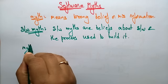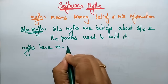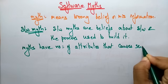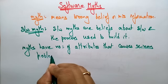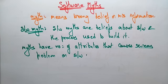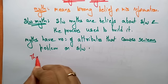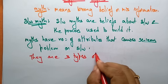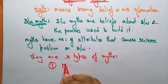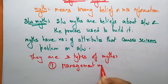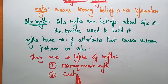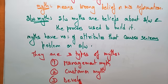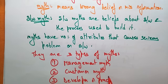The myths have a number of attributes that cause serious problems to software. There are three types of myths: one is management myth, the second is customer myth, and the third one is developer or practitioner myth.